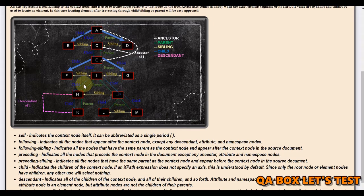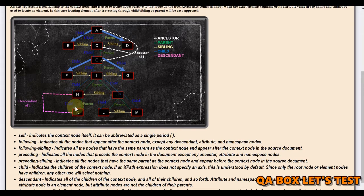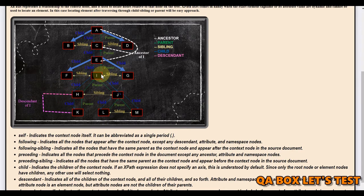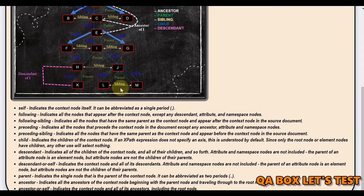Looking at the child part: 'i' has got two children 'h' and 'g', and they have further children — 'h' has the child 'k'. To find descendants, the children and their children will all become the descendants of 'i'.